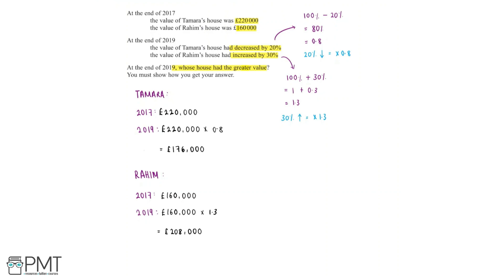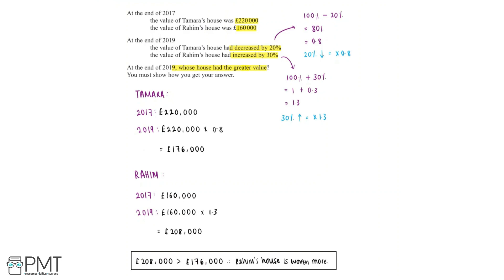We need to find out whose house had the greater value at the end of 2019. We know that Tamara's house was worth £176,000 at the end of 2019, and Raheem's house was worth £208,000 by the end of 2019. Since £208,000 is greater than £176,000, we can say that Raheem's house was worth more at the end of 2019.